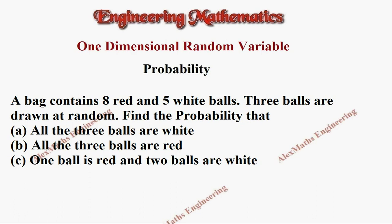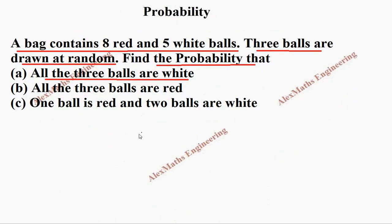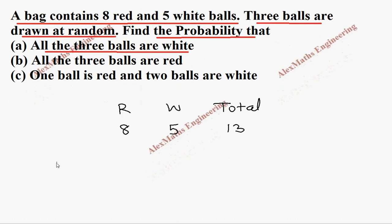Hi students, this is Alex. In this problem, they have given a bag contains 8 red and 5 white balls, and 3 balls are drawn at random. Let's write the given information: number of red is 8, number of white is 5, so totally we have 8 plus 5 equals 13, and we take 3 balls.